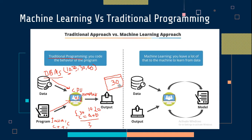This is a simple traditional programming flow. The programmer writes the program using any programming language, takes data from the database, combines it using the CPU and compiler, and displays the result on the screen. This is called traditional programming.